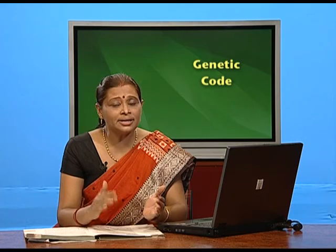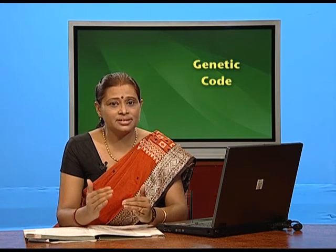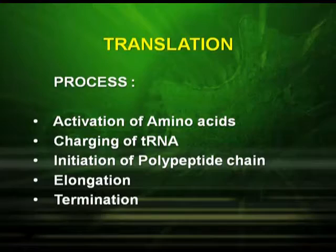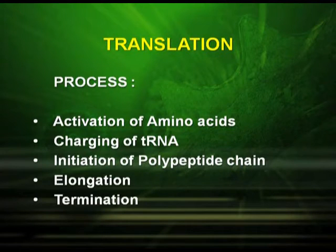Today we are going to discuss how RNA forms protein — that is the translation process — and where the gene is and how the gene is regulated. We will study the meaning, materials required for translation, and the process steps: activation of amino acid, charging of tRNA, initiation of polypeptide chain, elongation, and finally termination.